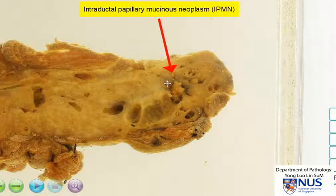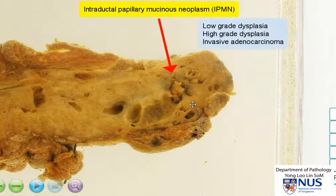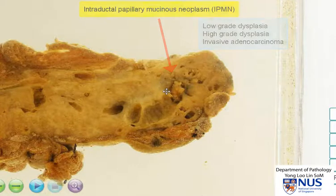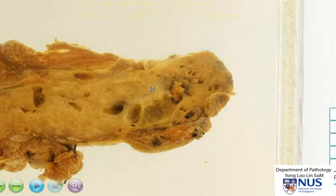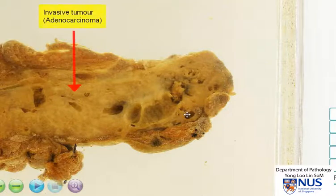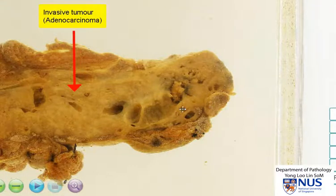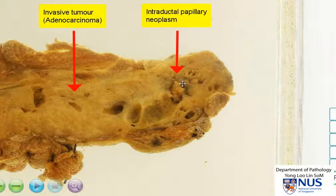IPMNs can have grades ranging from low-grade dysplasia to high-grade dysplasia, and they can even be associated with invasive adenocarcinoma. So in this instance, we definitely have a very large, ill-defined infiltrative or invasive tumour, and this is most likely an adenocarcinoma. We also have a background of an intraductal papillary neoplasm, as you can see here.